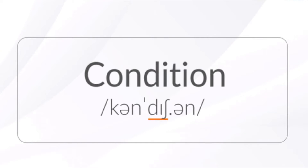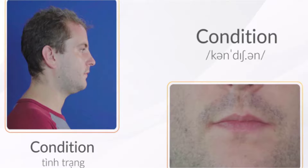Âm tiết đầu tiên chữ âm ơ ngắn: ơ, ơ. Các bạn không đọc là 'con' nhé. Các bạn cũng đừng quên âm cuối: ừ, ừ.